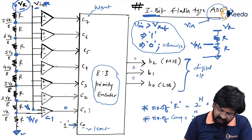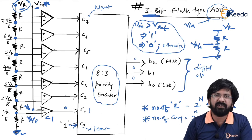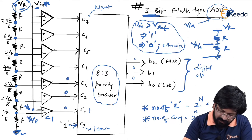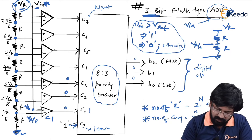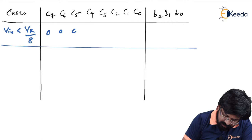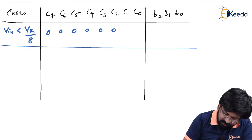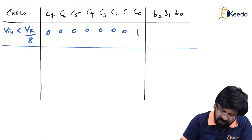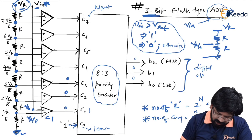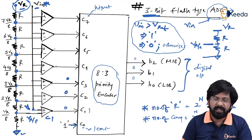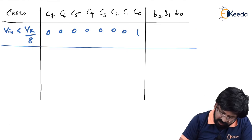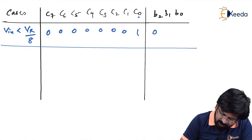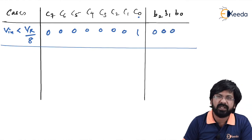If Vin is less than VR/8, naturally Vin is less than every reference voltage, so C2 through C7 are all 0. Only C0 is 1 (permanently). According to the encoder, when C0 equals 1 and all others are 0, the output is 000.